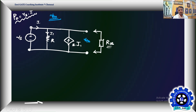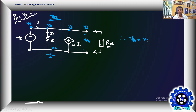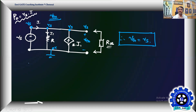V_Thevenin is the open-circuit potential between the two terminals where Rx was connected. Taking the bottom rail as zero volts, the top potential is Vs. Therefore V_Thevenin equals the supply voltage itself — the entire remaining circuit reduces to one voltage source Vs in series with R_Thevenin.